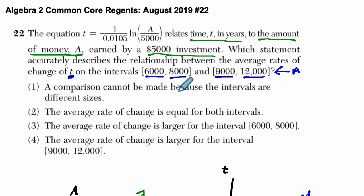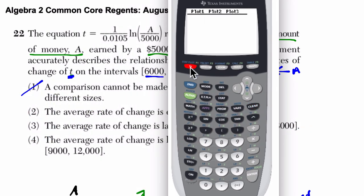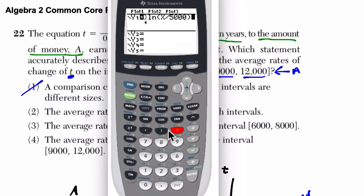Number one, a comparison cannot be made. We can compare them. The average rate of change is equal for both intervals, or the average rate of change is larger for the first interval, or the second interval. I'm going to actually use my calculator here because I feel like that speeds up the process. All right, so enough talking about this. Let's solve it. So I go to y equals. I clear off any old equations, and I type in what I have here. So I have 1 divided by 0.0105, close parentheses, natural log of A over 5,000. In our case, it's just x over 5,000. We're plugging that in, and that's our equation. So we hit enter.